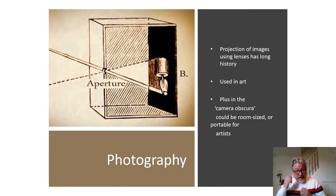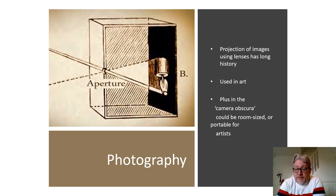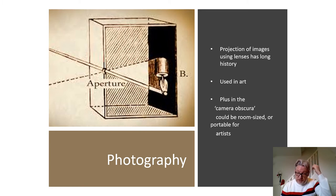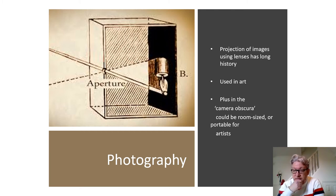But taking an image of the world is not the same as reproducing it through a drawing. Even at this point in the development of media, we are not in a position where you can actually take an image and reproduce it fully — there still need to be developments before we get to the photograph itself. Some of the principles of photography have been around for a very long time. The projection of images using lenses, for example, has a very long history, as you can see with the camera obscura — often used in art, and it could be room-sized or portable for artists to use.